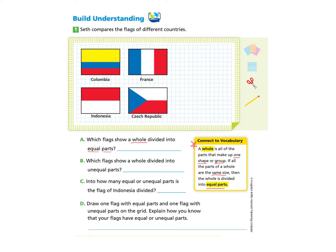Each of these flags has different colors to represent the different parts, so we can look at each flag and notice the colors to see if they are representing equal parts. We'll look at the first one, Colombia, and we notice that the red and the blue look equal together, but the yellow is a very large piece. So those are not equally divided.